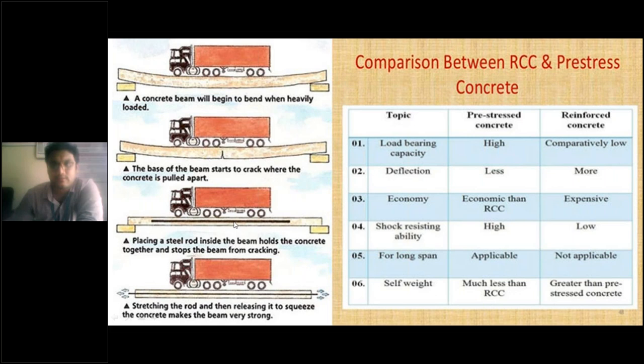Coming to the third stage: placing a steel rod. To control the cracks, the next improvisation is providing a steel rod perpendicular to the crack. The crack is vertical and the reinforcement is perpendicular to it. Placing a steel rod inside the beam holds the concrete together and stops the beam from cracking. Even though the vehicle is heavily loaded, there will be no cracks, because the steel is taking care of the tensile forces.